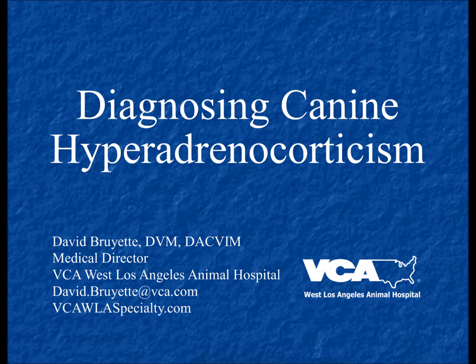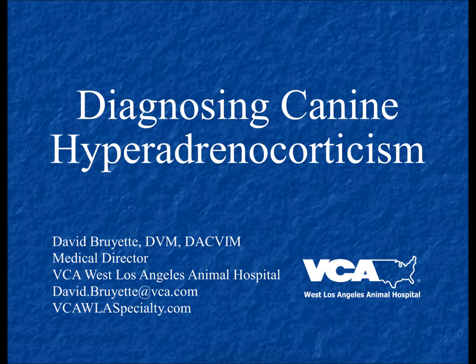We have good data on incidence for many endocrine diseases in dogs — 1 in 1,200 get diagnosed with Cushing's, 1 in 300–400 with diabetes, 1 in 300 cats with hyperthyroidism. But we don't know the incidence of hypothyroidism in dogs, partly because there's no agreement on diagnostic criteria. A lot of data comes from referral and tertiary care centers with an over-representation of purebred dogs. It's probably safe to say hypothyroidism is not the most common endocrine disorder in the dog, but it's probably the most over-diagnosed, simply because so many people rely on just looking at total T4.